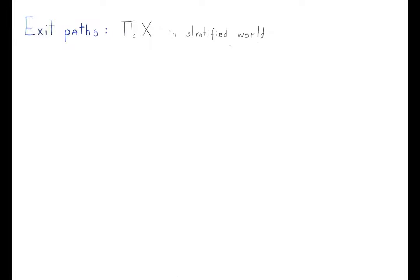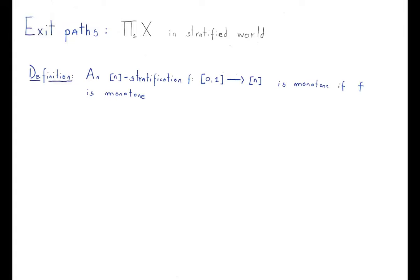To get a monodromy equivalence in the stratified context, we need to define an analog of the fundamental groupoid. In the classical theory the fundamental groupoid has points and paths between points. Now we want stratified paths. We stratify the interval and say this stratification is monotone if the function, as a poset map, is monotone. I put here the poset with n elements with the usual order — for compactness reasons the poset will have a finite number of zero strata, so without loss of generality we can take this poset.